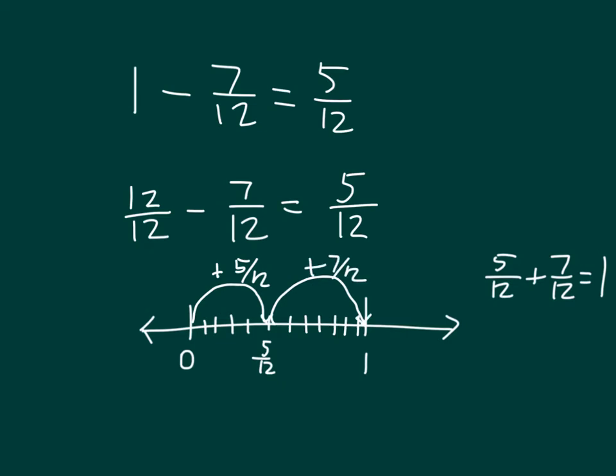And it looks the same way, in that when we renamed 1 as 12 twelfths minus 7 twelfths, we would have ended up at 5 twelfths.